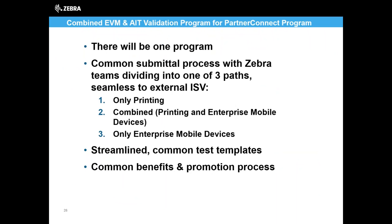We have a new Partner Connect program — a single unified program with different engagement options: whether you're only doing printing with a non-Zebra handheld, using both printing and our mobile computers, or just mobile computers. We provide one seamless way of communicating and working with us, with streamlined testing templates. Benefits and promotions are the same across whether you're primarily working with the printer team or the enterprise team. To submit for validation, go to Partner Gateway if you're a Zebra partner, or developer.zebra.com — click the Global Solutions Center tab for contact links.